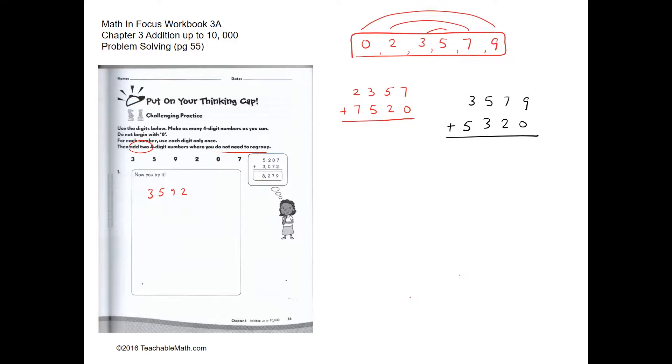We have to find digits that do not make 10 or more. So in this case, 7 and 0 is less than 10, 5 tens and 2 tens is 7 tens, 300 and 500 is 800, 2000 and 7000 is 9000.